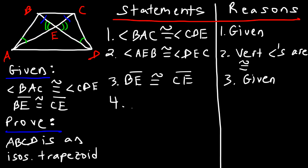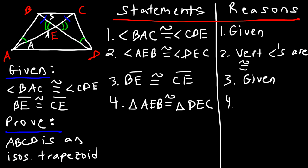Statement 4 — triangle AEB is congruent to triangle DEC. This is based on the Angle-Angle-Side (AAS) postulate, using statements 1, 2, and 3 to arrive at that conclusion.